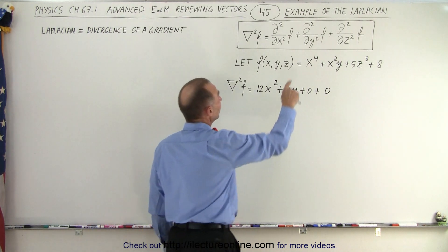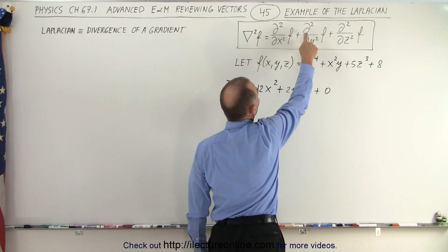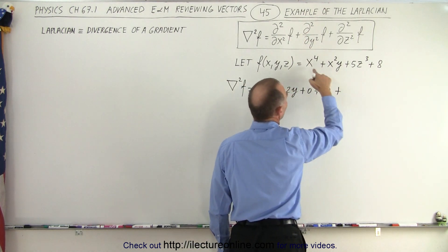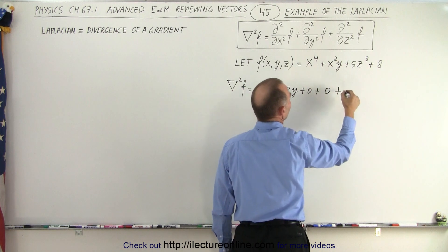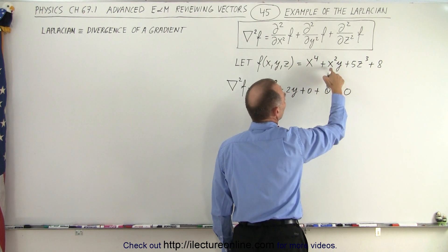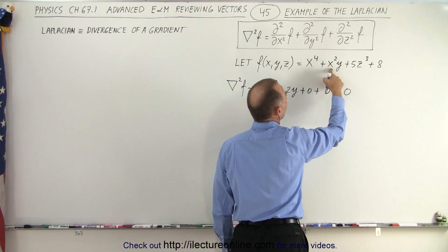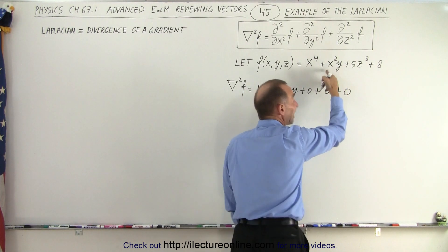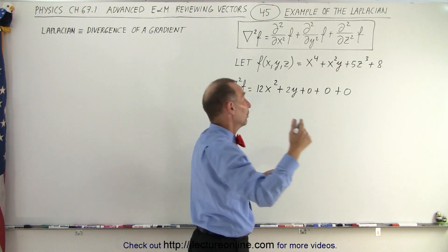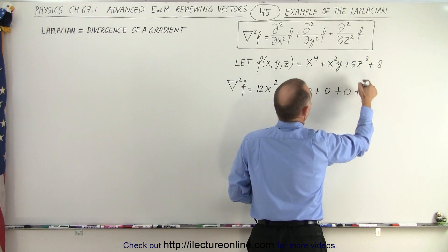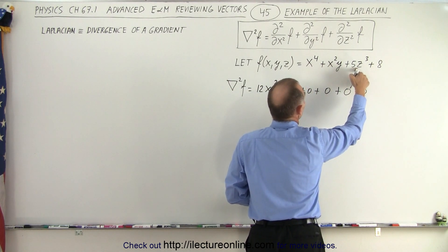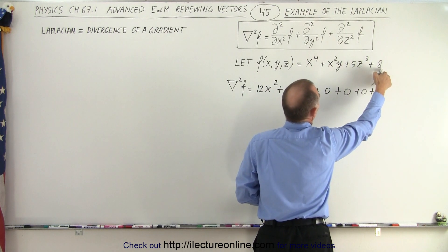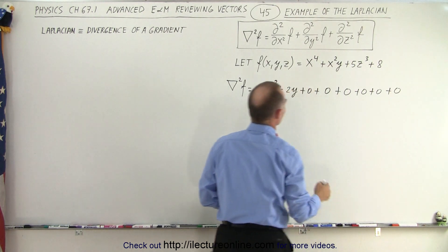Now we do the second part and take the partial derivative with respect to y. The partial derivative of the first term with respect to y is 0. For the x-squared-y term, y is the variable and x squared is the constant, so the first derivative gives x squared, but the second derivative of that constant gives 0. The remaining terms also contribute 0 when differentiated twice with respect to y.